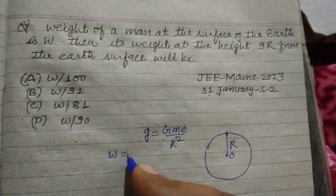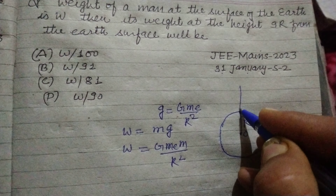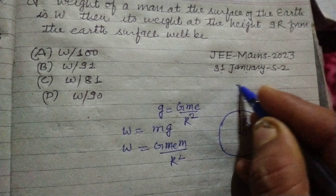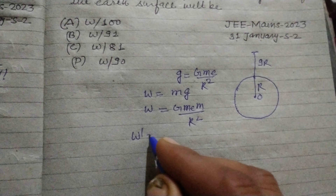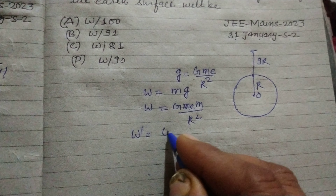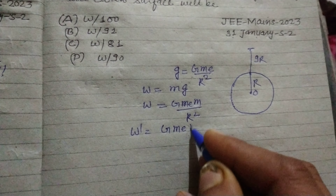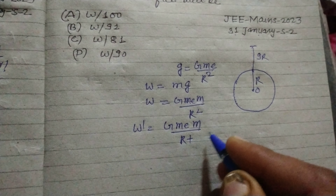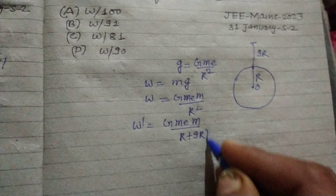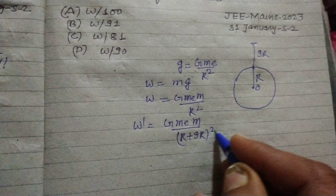Now when the man goes up to a height of 9R from the earth's surface, so this distance is 9R, it means W' = GmE / (R + 9R)².